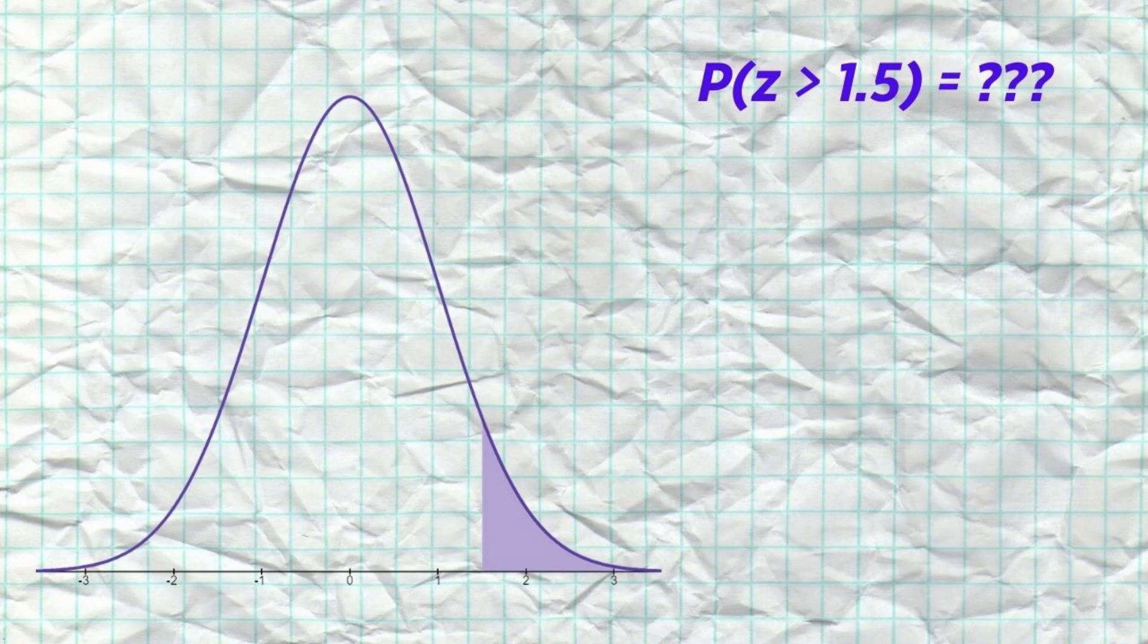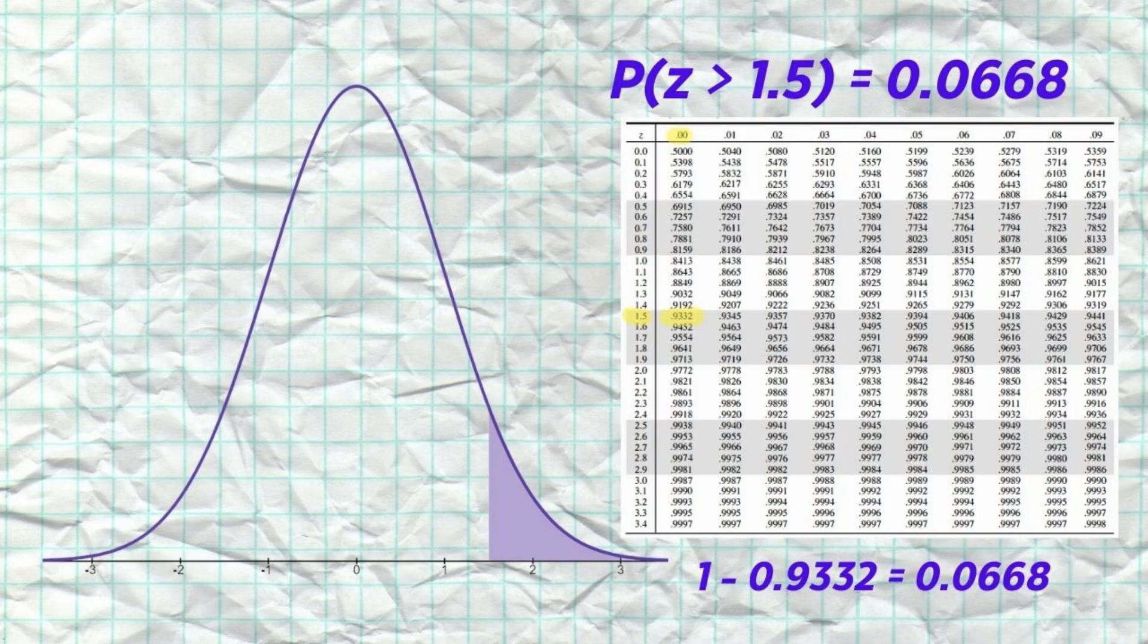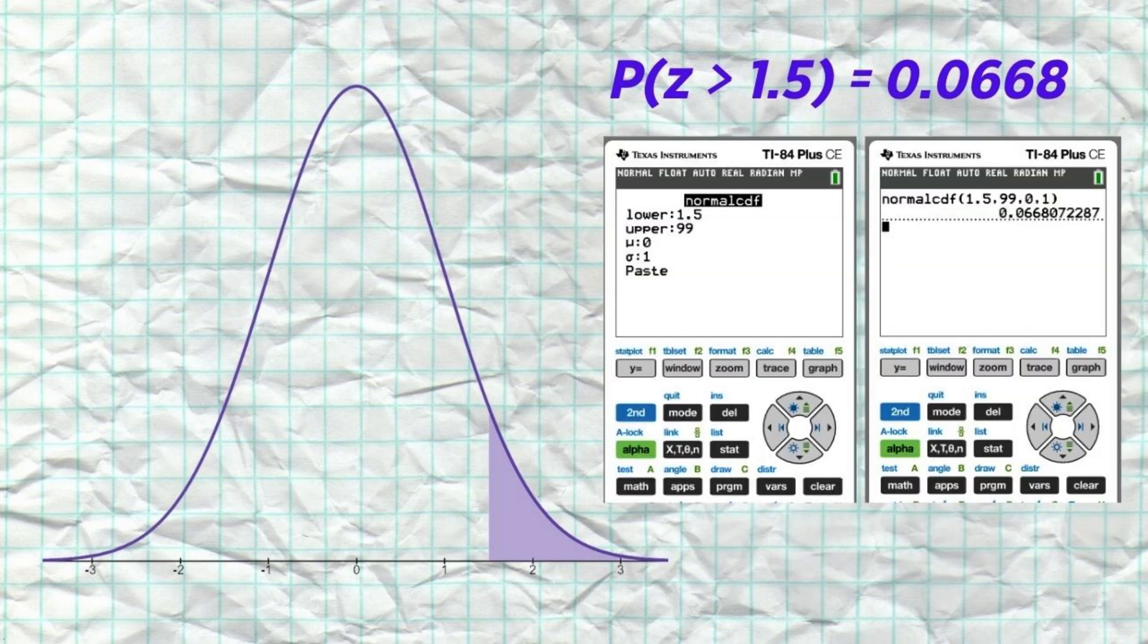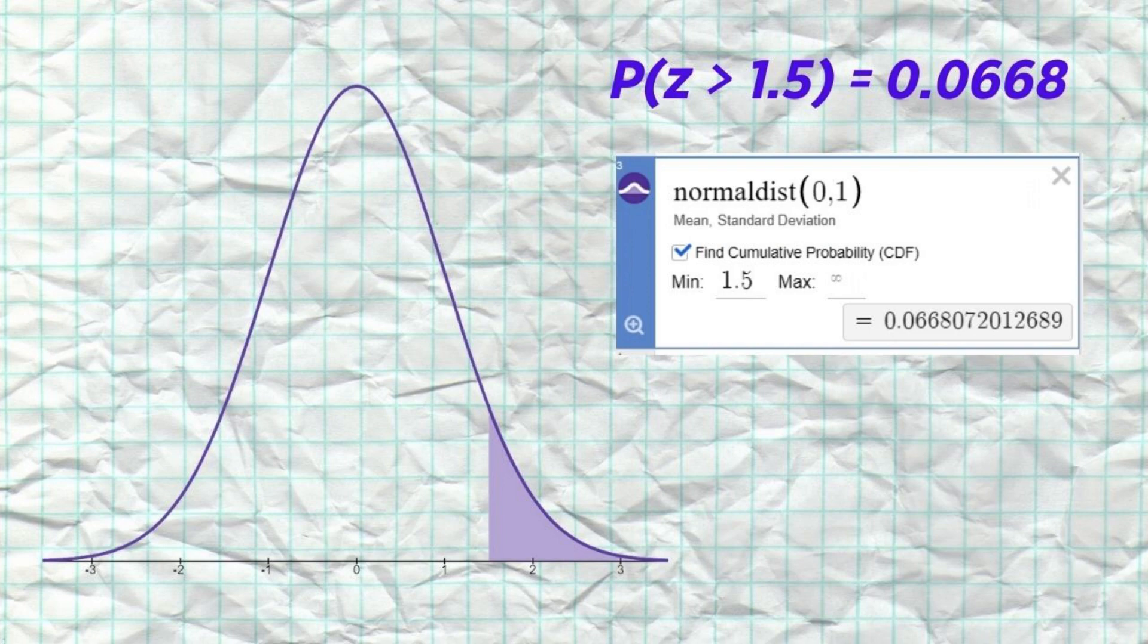Because all normal distributions are the same when we standardize them, we can find proportions under any normal curve. For example, if we wanted to find the proportion of observations that are above a standardized score of 1.5, we could use either a normal table, a TI-84 calculator, or a program like Desmos. And in any of those methods, we find out that 6.68% of observations are above a z-score of 1.5 in any normal distribution.